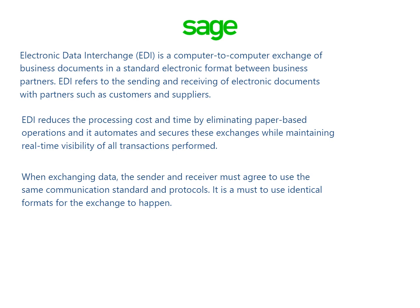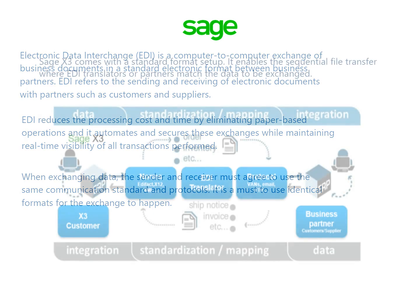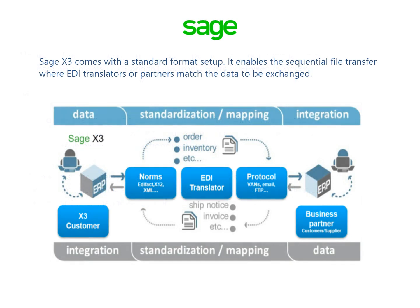When exchanging data, the sender and receiver must agree to use the same communication standard and protocols. It is a must to use identical formats for the exchange to happen. SAGE X3 comes with a standard format setup. It enables the sequential file transfer where EDI translators or partners match the data to be exchanged.